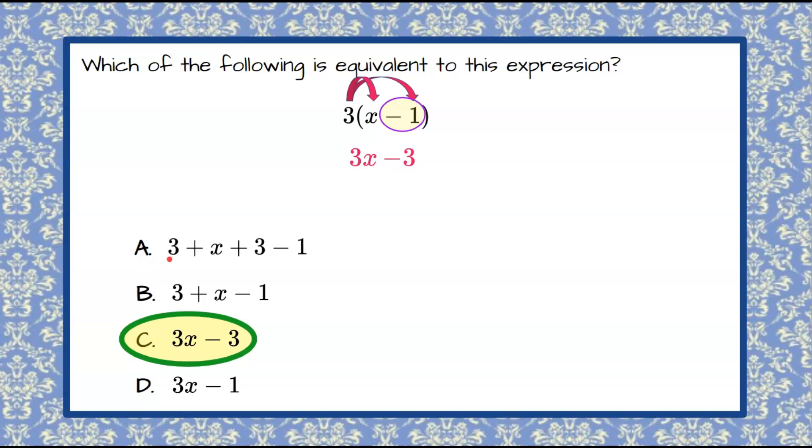So let's look at choice A. Choice A has the variable x and then it has three like terms. These three terms are all constants and we can combine them to write this in simplest form. So we have x and then we have 3 plus 3 is 6 and negative 1 is 5. x plus 5 is not equivalent to this expression so that was correct. This is an incorrect choice and not our correct answer.